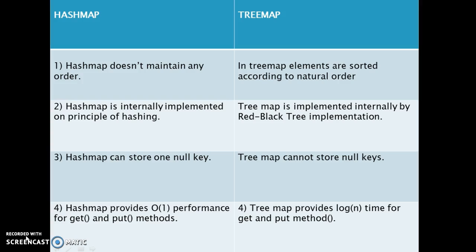The first difference is HashMap does not maintain any order, but TreeMap elements are sorted according to the natural order. Whenever we retrieve the elements from HashMap the order of elements is not guaranteed, but when we retrieve elements from TreeMap, elements are in sorted order.